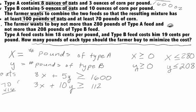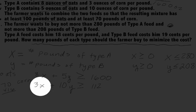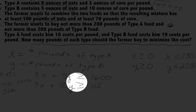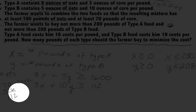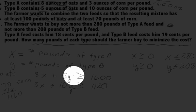We do the same for corn. Type A has 3 ounces of corn per pound and type B has 10 ounces per pound, giving us 3x + 10y. We want at least 70 pounds of corn, so converting: 70 × 16 = 1120 ounces. The inequality is 3x + 10y ≥ 1120.